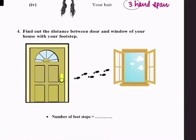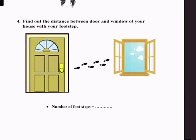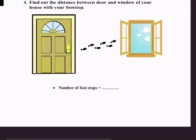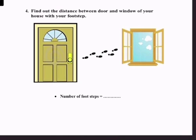Question number 4: find out the distance between the door and window of your house with your footsteps. Aapne darwaze aur khidki ke beech ki jo distance hai usko footsteps se measure karna hai aur number of footsteps yahan dikhane hain. So 10 footsteps.